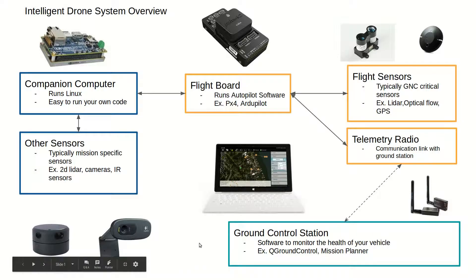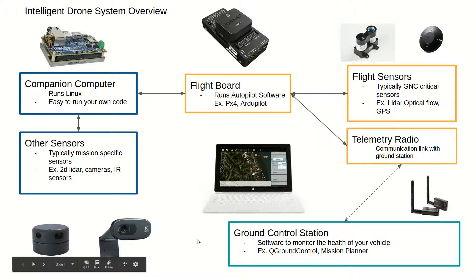I'm going to start by going over the flight board. The flight board has a hardware and a software aspect to it. The hardware aspect is the actual board which you can connect a bunch of different sensors to, and it also has a couple of different embedded sensors, which are accelerometers, an IMU, and a compass, and this typically helps with the stability of the drone and keeping the drone level.